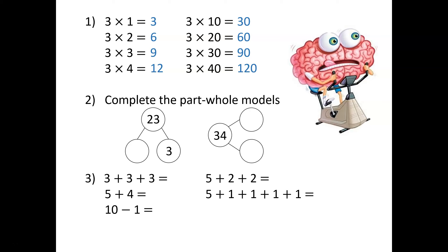Three times three is nine ones. Three times three tens is nine tens. So three times thirty is ninety.